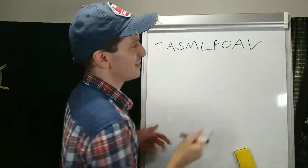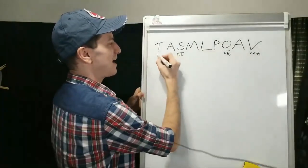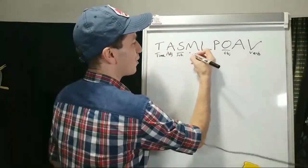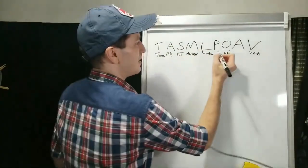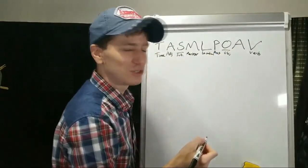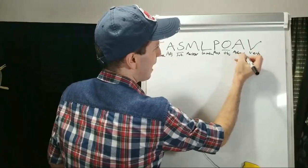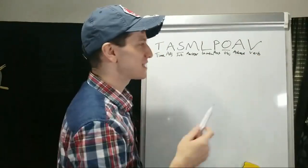Someone was asking, is there a better way to remember how to organize them all together? And I made one for you guys. T-A-S-M-L-P-O-A-V. So here we have subject, object, and verb. But this adds in time, this adds in adjectives, marker - subject marker, topic marker, anything like that - location. This is the post position, so inside, outside, next to. The object, the adverb, how you're doing something, and then the verb. You probably wouldn't use all of these, but let's take a simple sentence.